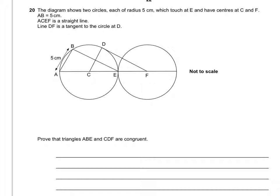We need to prove that triangles ABE and CDF are congruent to each other. So first of all, we've got here that side AB is 5cm. That's been given to us.